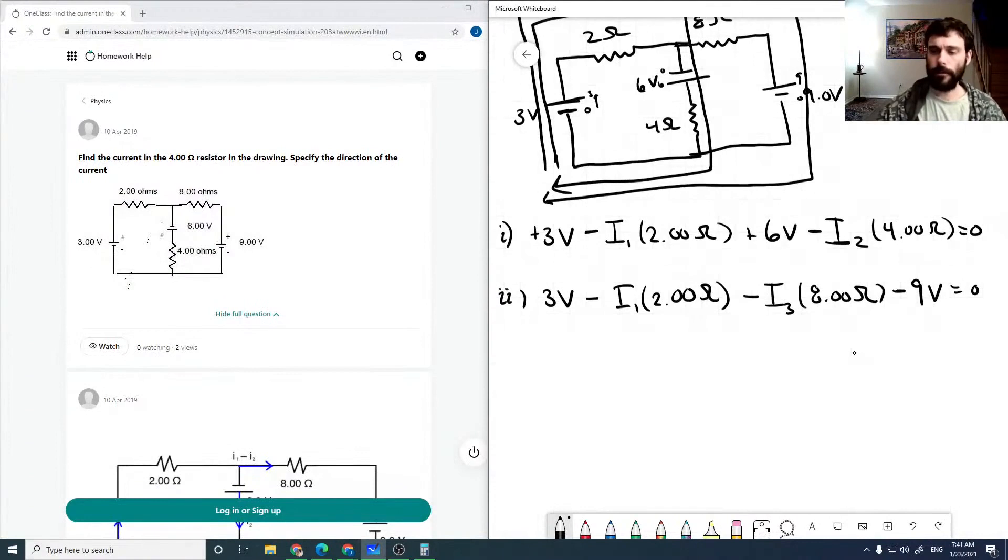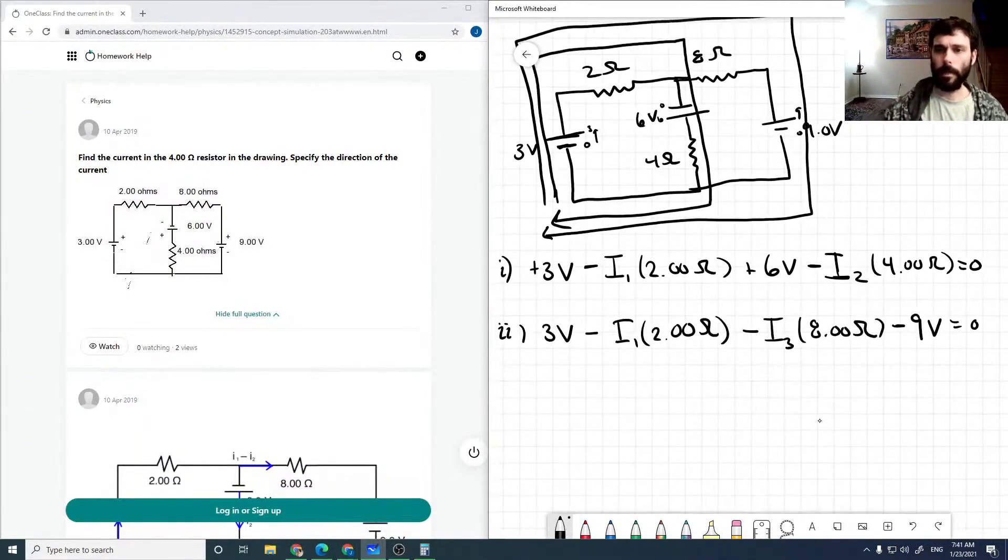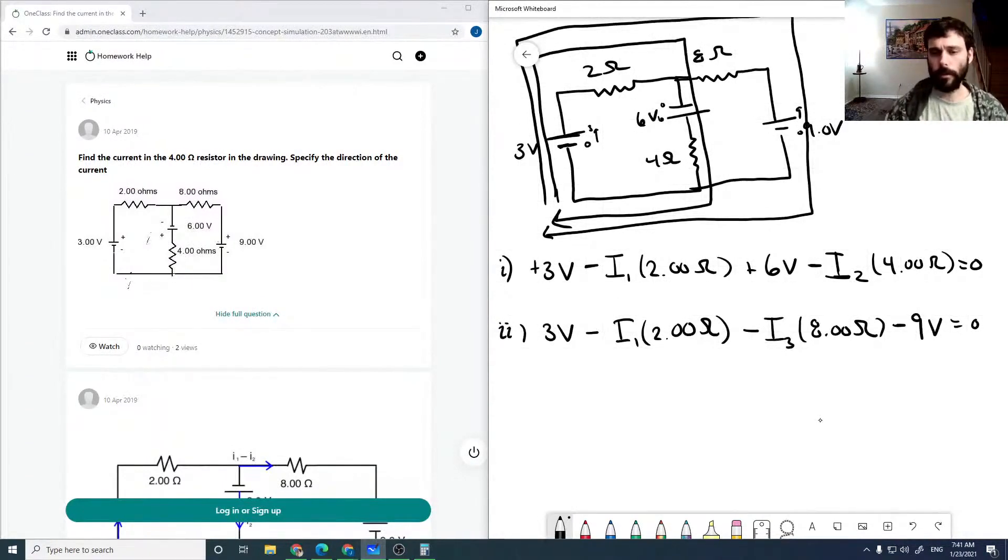Now to solve for our individual currents, we also need I1 is our total current. So I1 is equal to I2 plus I3 in this case. And so then we can say that, and because we're solving for our I2, so that's the one we want, then we might as well express it as I3 is I1 minus I2.